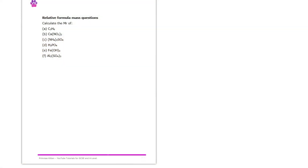Here we're having a look at some questions on relative formula mass. We're asked to find the relative formula mass, or Mr — sometimes also called the molar mass — of a few different substances. What I'd suggest you do is get your periodic table out and look at all of the atomic masses, because those are the things we need to answer these questions. Let's start by looking at question A.